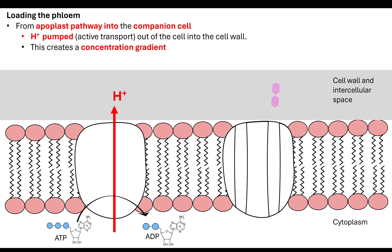We need to talk about how it gets back across the plasma membrane into that companion cell. That's done by actively transporting hydrogen ions out of the companion cell into the cell wall or intercellular space. The reason they pump the hydrogen ions is to create a concentration gradient. Because it's active transport, we require ATP. That ATP is hydrolyzed down into ADP, and the energy released pumps those hydrogens against their concentration gradient.